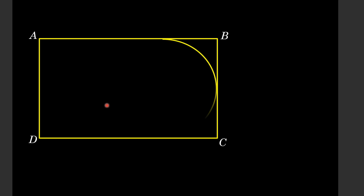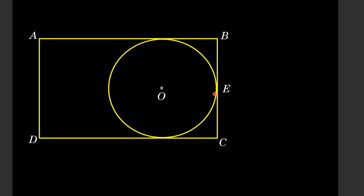We draw a circle inside the rectangle with the center at point O in such a manner that this circle is touching the rectangle from inside at three different points, which are actually three sides of the rectangle, especially the side BC at point E. If we draw a line segment from point E to the side AD, it meets the side AD at point G and also crosses the circle at point F.